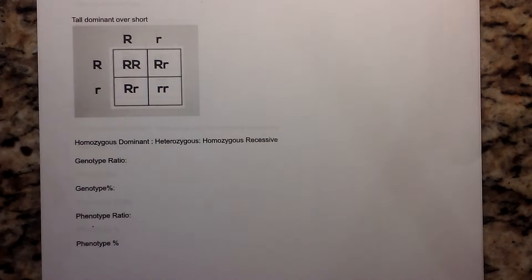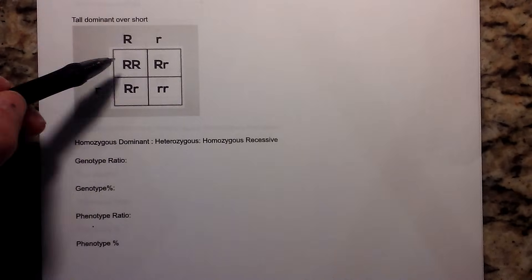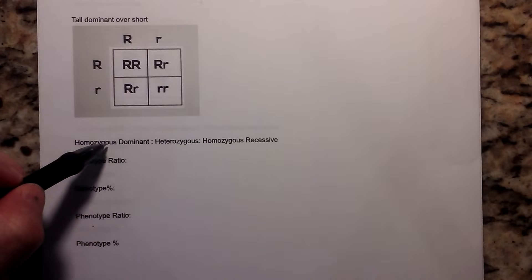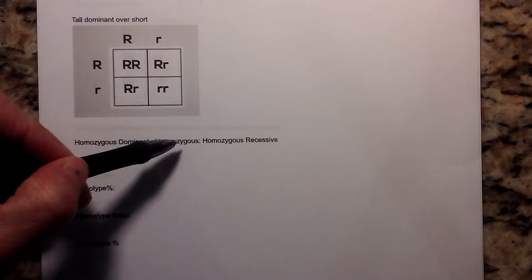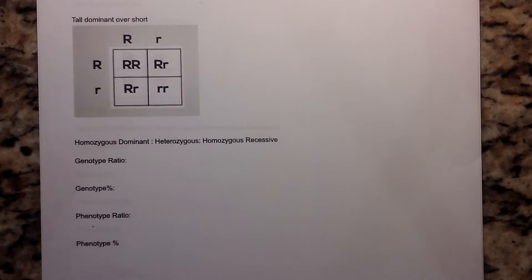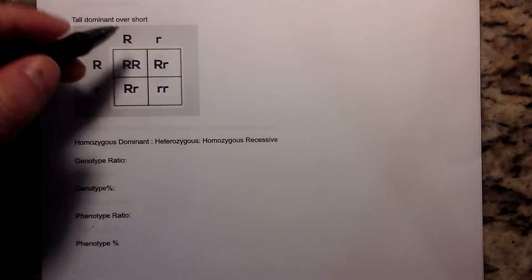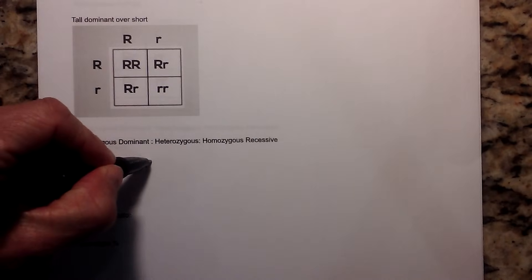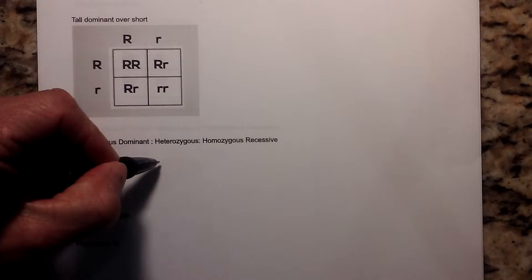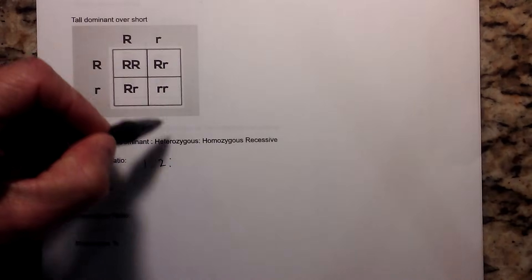Tall is dominant over short. Whenever you write the genotype ratio, and remember the genotype is the genetic code, you will write the homozygous dominant, then the heterozygous, then the homozygous recessive. So let's go ahead and write this out. First, let's look for homozygous dominant. We have one of those. I'll write a 1. And now for heterozygous, we have 1, 2.